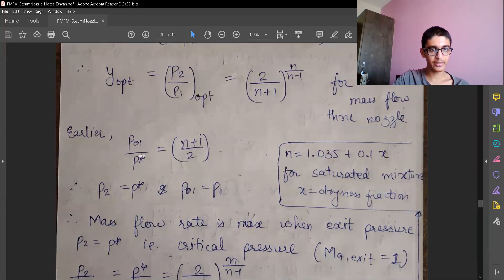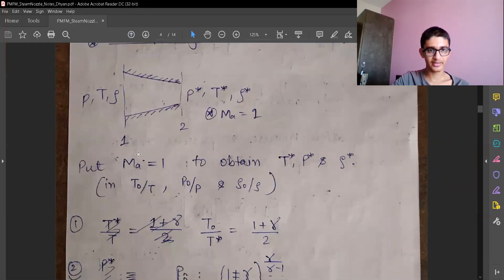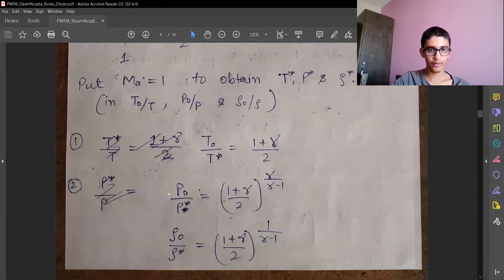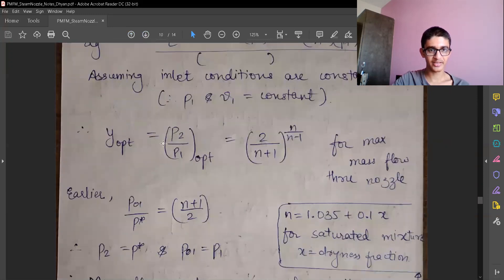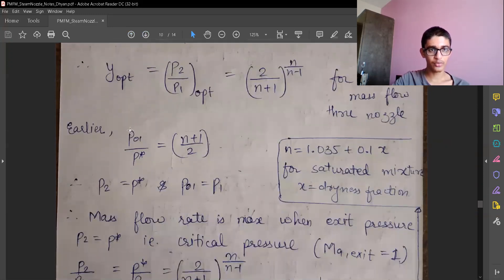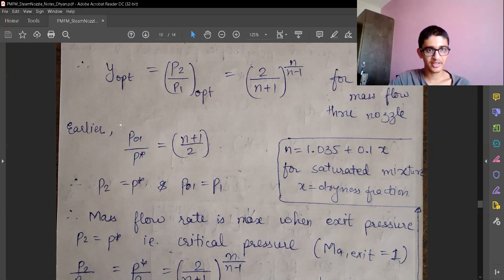And we had earlier a relation between P01 and P star, that is critical properties of pressure equals N plus 1 upon 2. So you must remember this—earlier we have seen critical conditions. Critical properties, the same relations I am going to use now, but these are with respect to stagnation property and critical property. So there are no actual pressure over here—these are stagnation pressure and critical pressure directly.